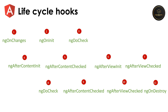An Angular component's lifecycle starts when Angular creates the component and displays it. Throughout its lifecycle, Angular keeps checking for changes in the component's data and updates the DOM accordingly. The lifecycle ends when Angular removes the component and its view from the screen. There are 8 lifecycle hooks, and this is the order in which they are triggered.